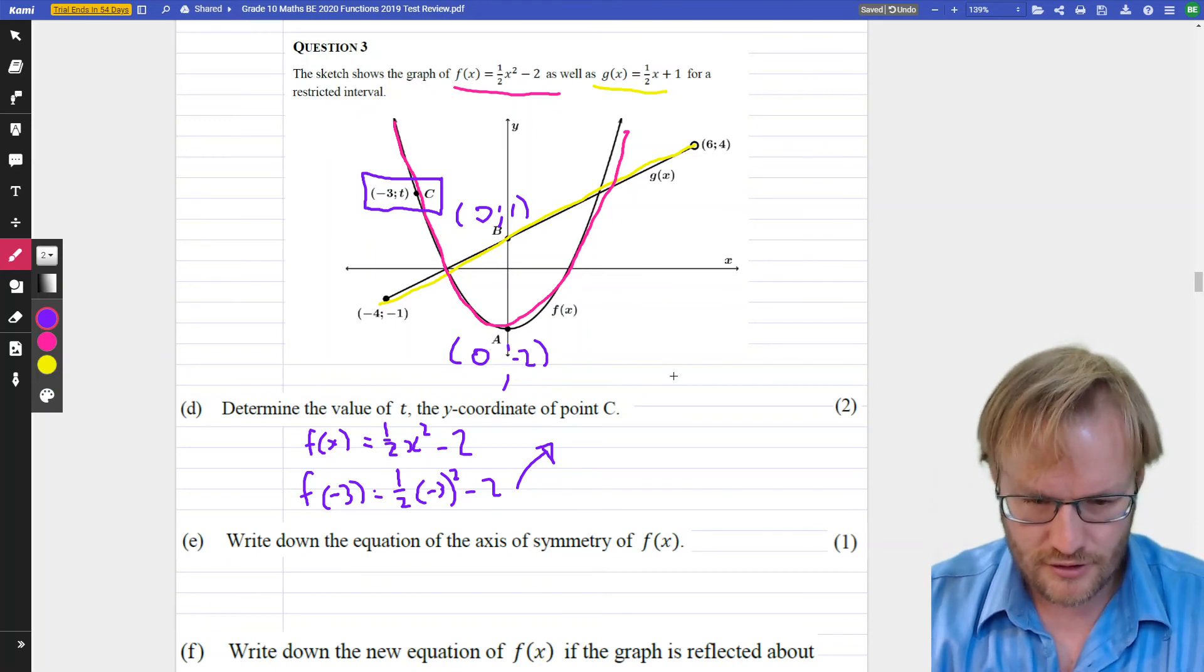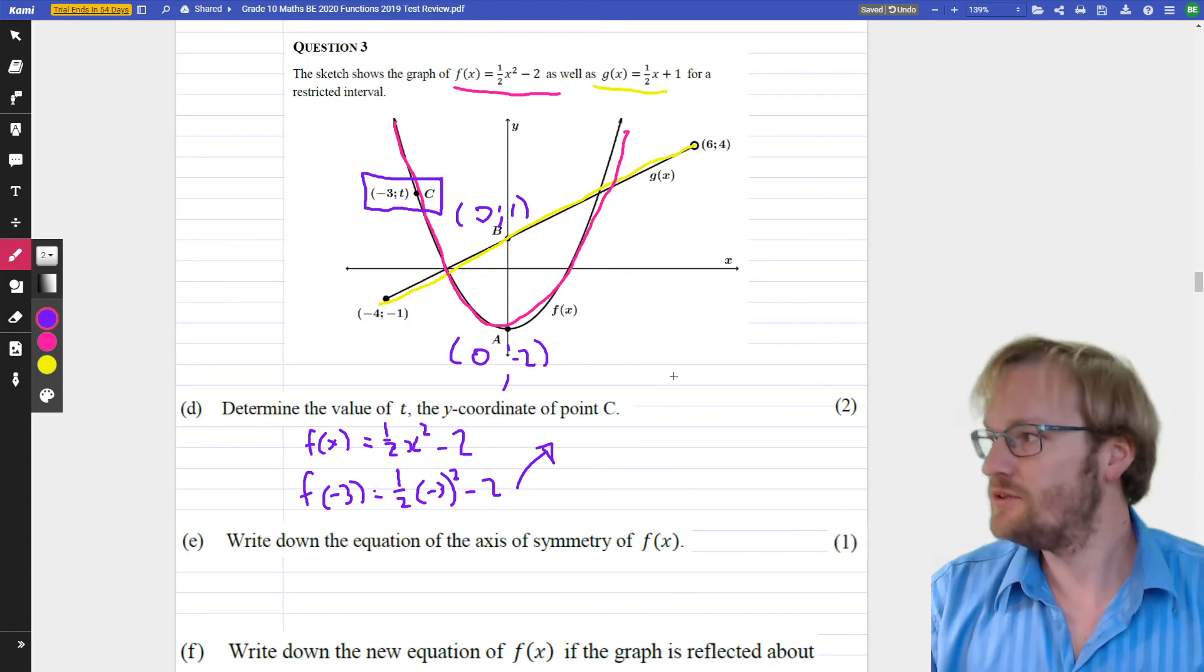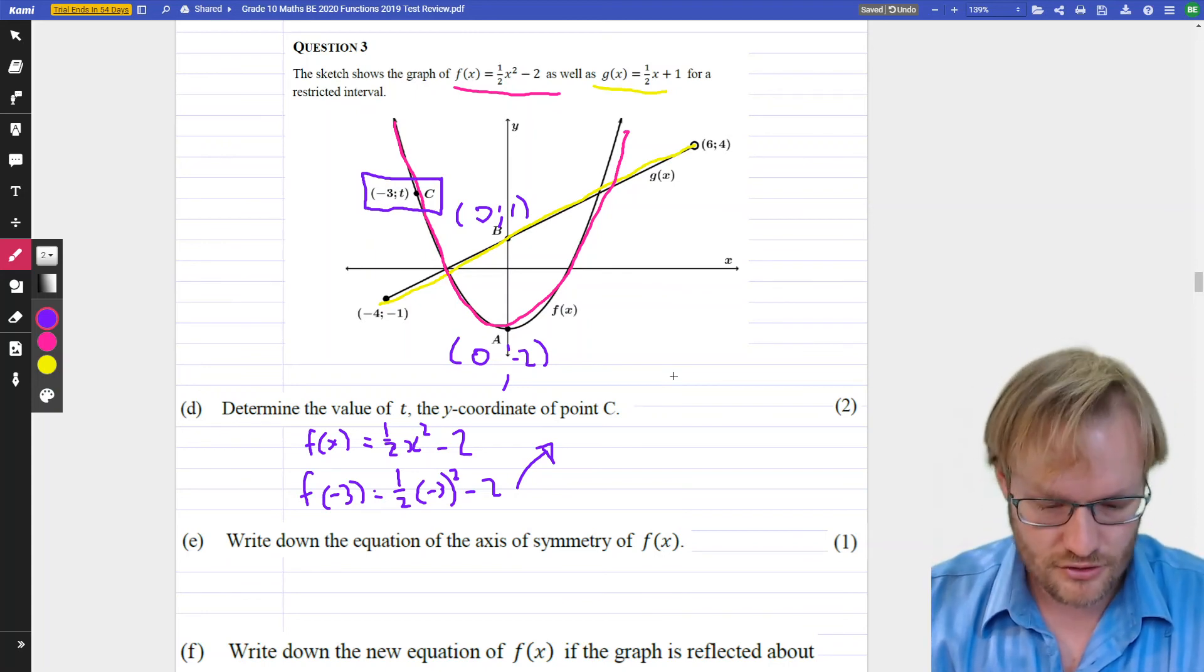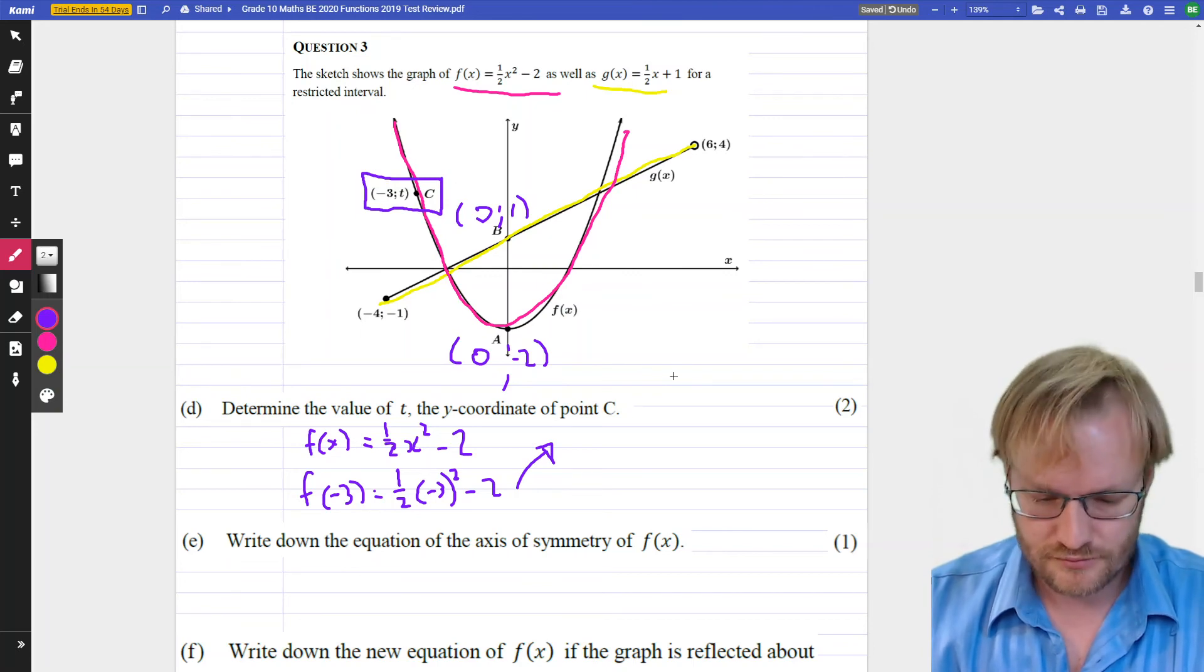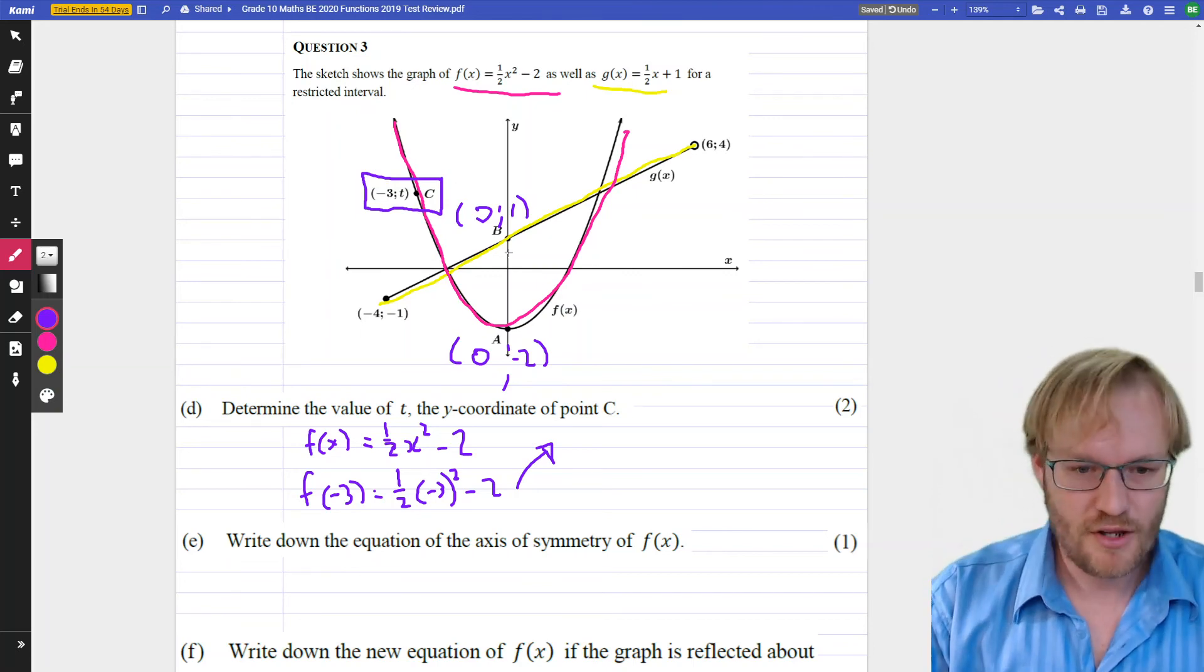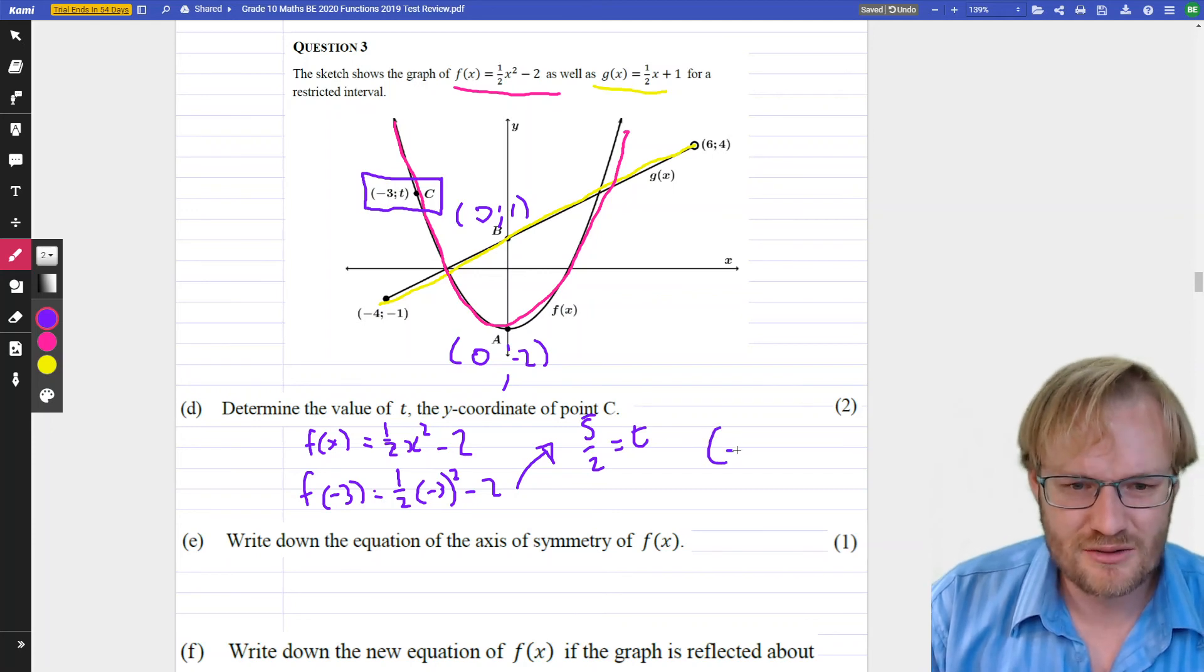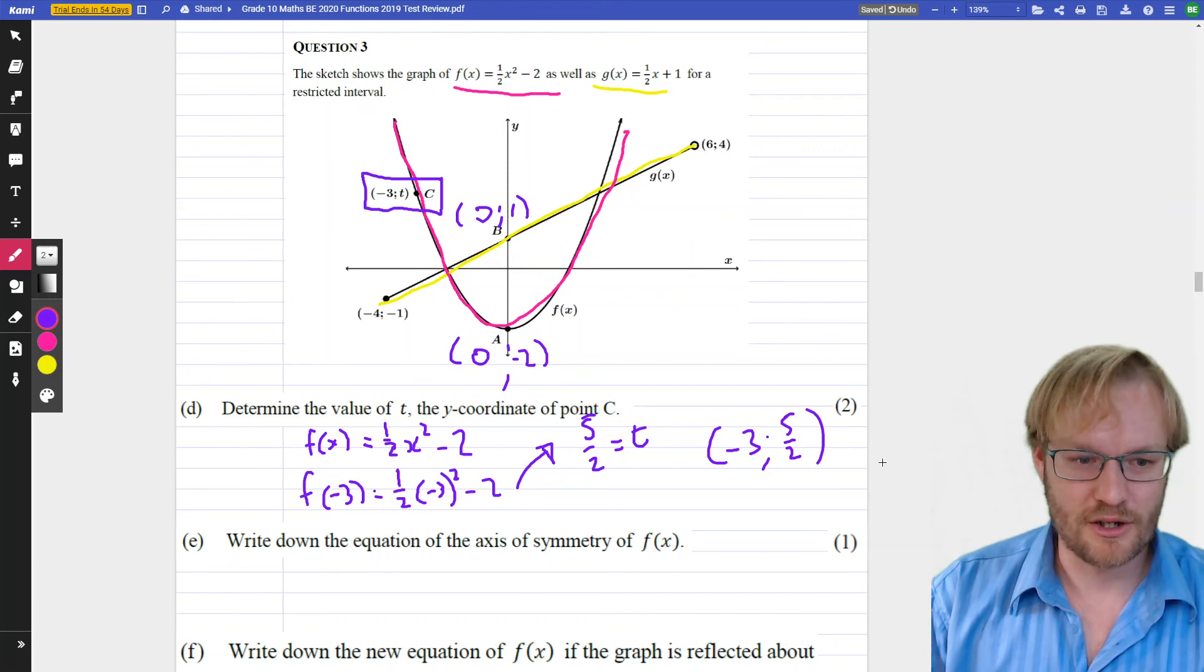Really plug this into your calculator. 1/2, and we're going to go for this. Okay, 1/2 times (-3)² - 2, 5/2, 5/2. So in other words, this is what t is. I always like putting these in nice coordinates. 5/2, there we go.